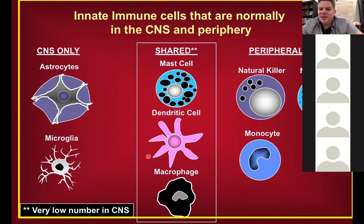In the brain we mostly find astrocytes and microglia as the innate capacity. Mast cells, dendritic cells, and macrophages are present in the brain but at very low numbers in specialized areas. Natural killer cells and monocytes are generally not found in the brain. These visiting cells are not permanent residents — they're in a 'just visiting' profile.